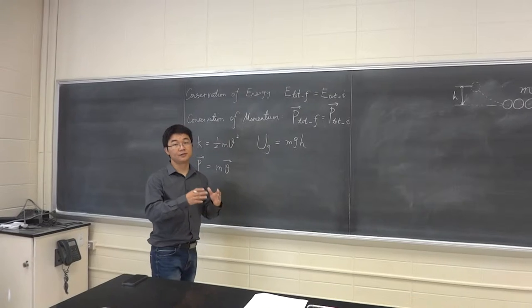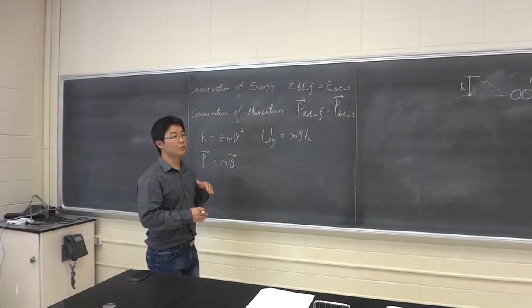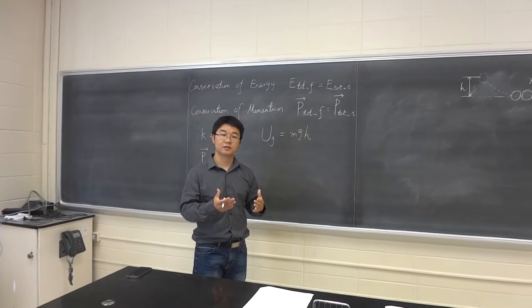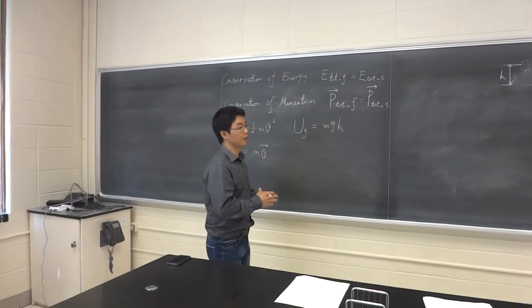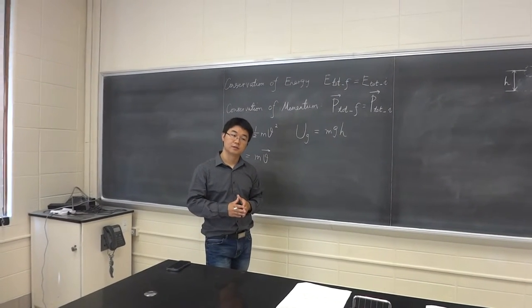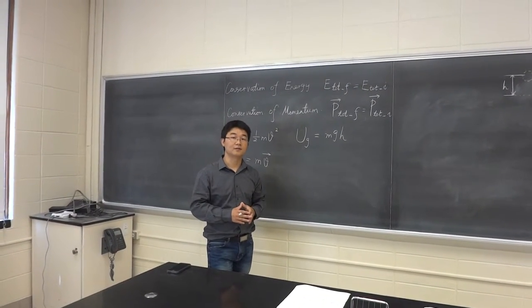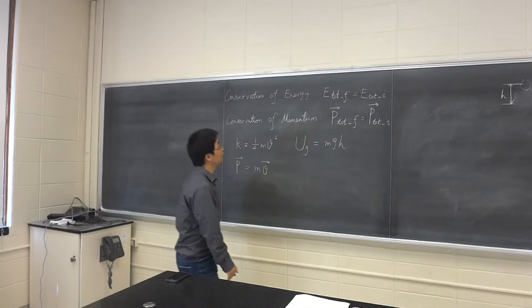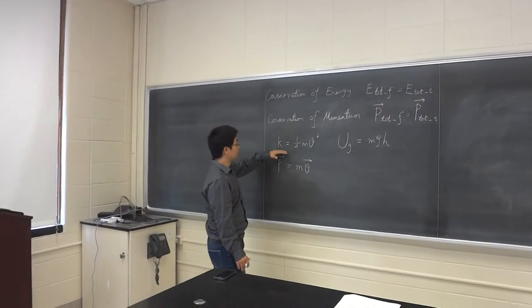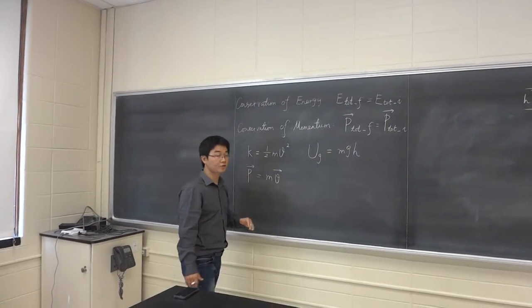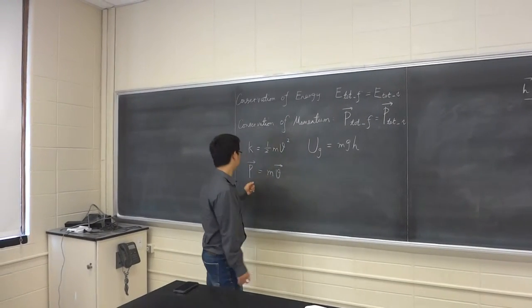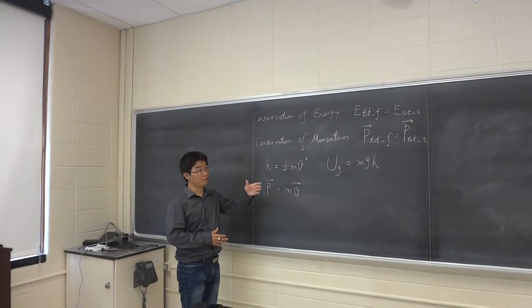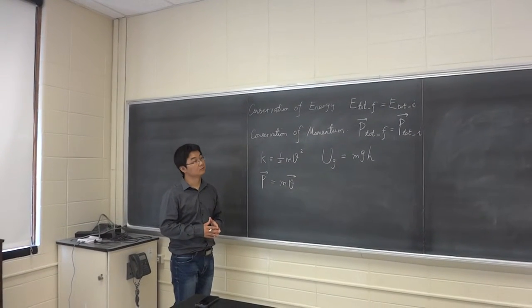So when we analyze momentum, we have to analyze it in three different directions: x, y, and z. In some cases, the momentum in one direction, for example the x direction, is conserved; however, the momentum in the y or z direction is not conserved. So we should be careful when analyzing momentum. I've also written down the definitions of kinetic energy, gravitational potential energy, and momentum here. We're going to use these definitions when we analyze the cradle.